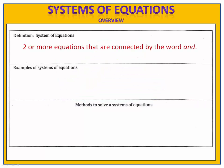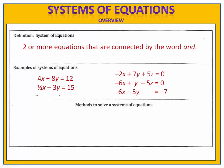Whenever you have two or more equations that are connected by the word AND, you have a system of equations. A system of equations can have any number of variables. You could have two variables, three variables, or even more.